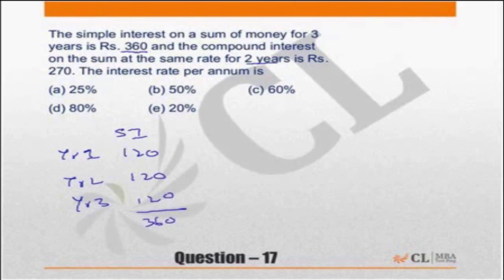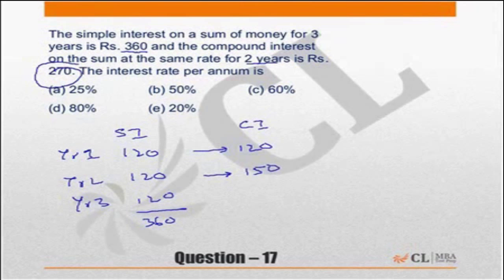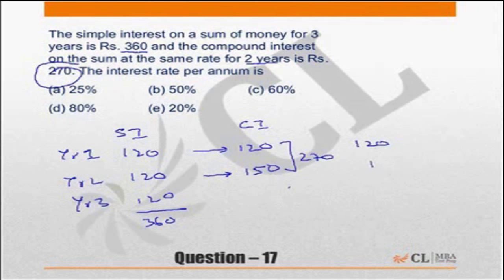What about compound interest? In the first year, compound interest and simple interest are the same. The total compound interest for 2 years is 270. That means the compound interest received in the second year will be 150. This total adds up to 270. When you are compounding, you get 120 as interest in the first year and 150 as interest in the second year — a gap of 30 rupees.